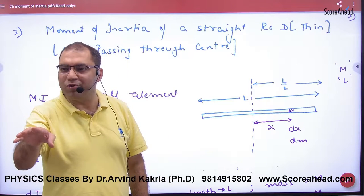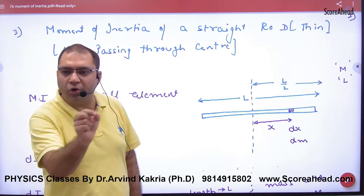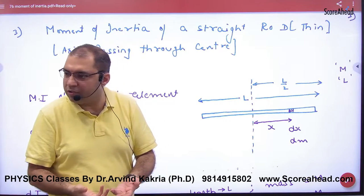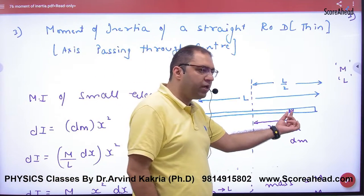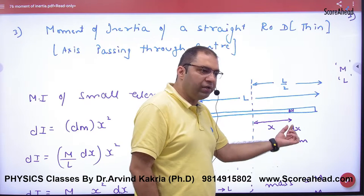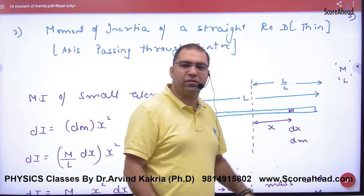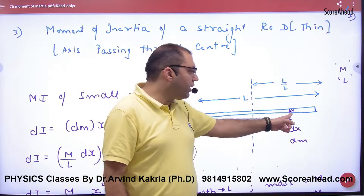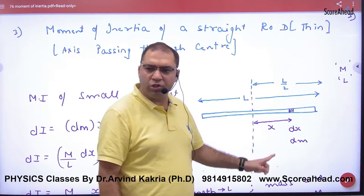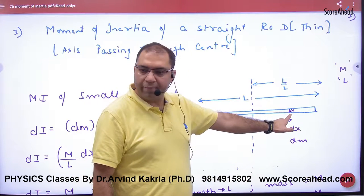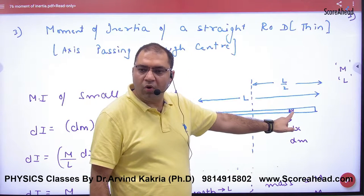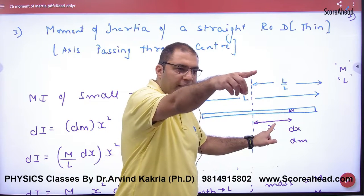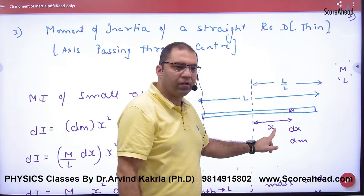Now consider the elementary portion. The rod is made up of small length elements. The small length is dx and the small mass is dm. This dm is a point mass. So how much distance is it from the axis? The moment of inertia of this small element will be dm into x squared.